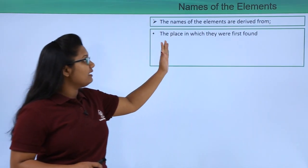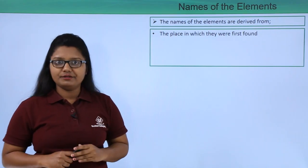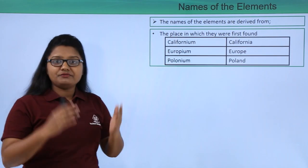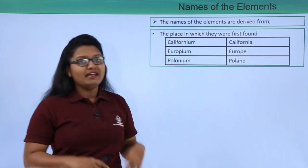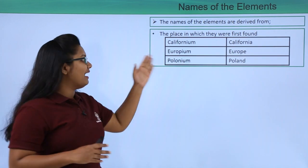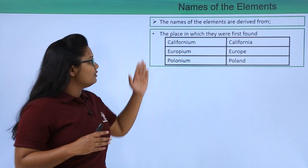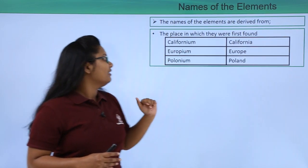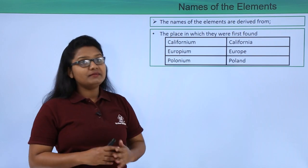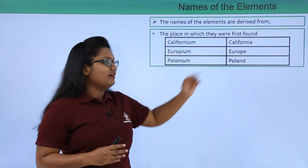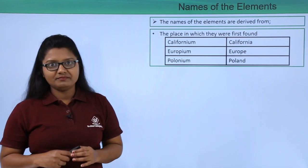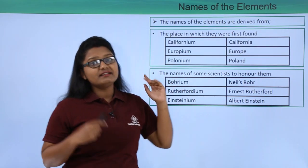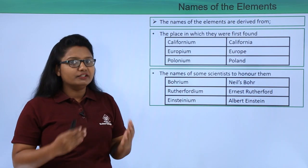Some of the names of these elements are derived from the place in which they were first discovered. For example, the element californium was first found in California. The element europium was named after Europe, and the element polonium is named after Poland, where it was first discovered.